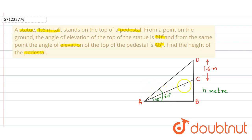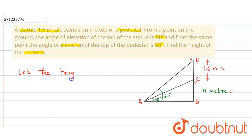We can see that 1.6 meters is the height of the statue, and we have considered h meters to be the height of the pedestal. The angle of elevation for the pedestal is 45 degrees and for the top of the statue it is 60 degrees. Let the height of the pedestal be equal to h meters.